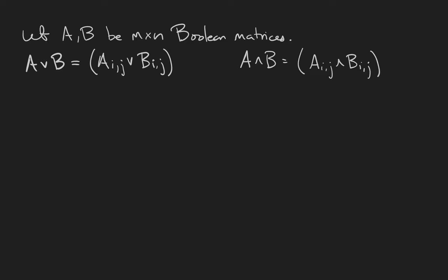In this video we're going to talk about the basic operations on boolean matrices, and by basic I mean everything except multiplication. The join of two boolean matrices of the same size is created by taking the joins of the respective entries.